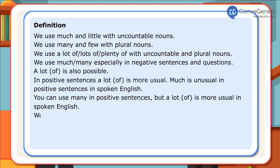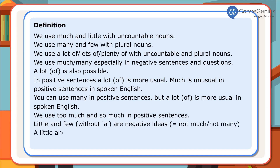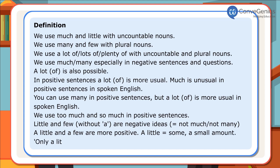In spoken English, you can use many in positive sentences, but a lot of is more usual. We use too much and so much in positive sentences. Little and few without 'a' are negative ideas — they mean not much and not many. A little and a few are more positive: a little means some, a small amount. Only a little and only a few have a negative meaning.